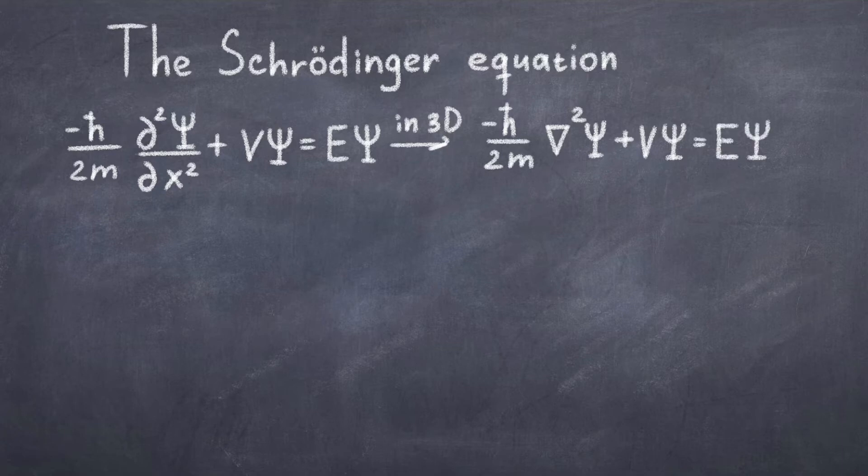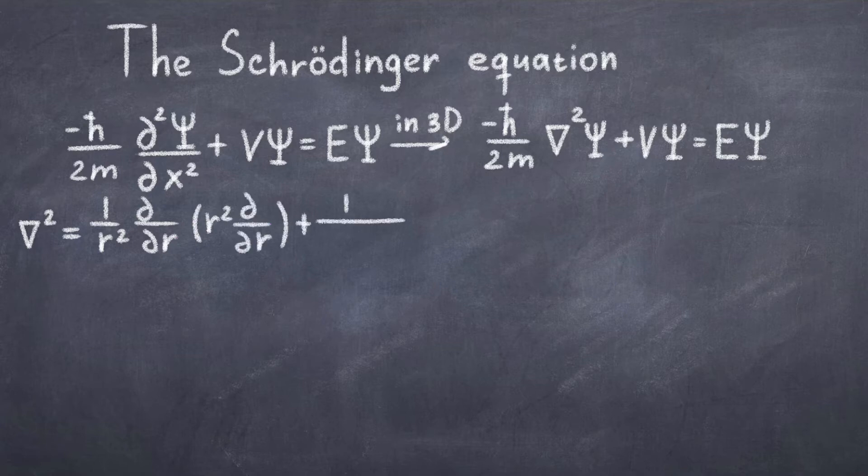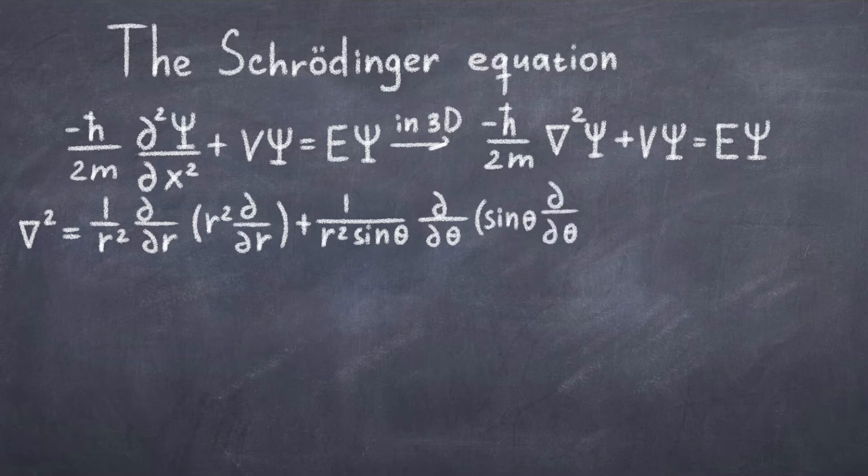In these coordinates, one can write the Laplacian operator as nabla squared equals 1 over r squared, the differential of r with respect to r squared and then the differential of r again, plus 1 over r squared times sine to the angle theta, times the differential with respect to theta of sin theta, and the differential with respect to theta, plus 1 over r squared times sine squared of theta, times the double derivative with respect to phi.